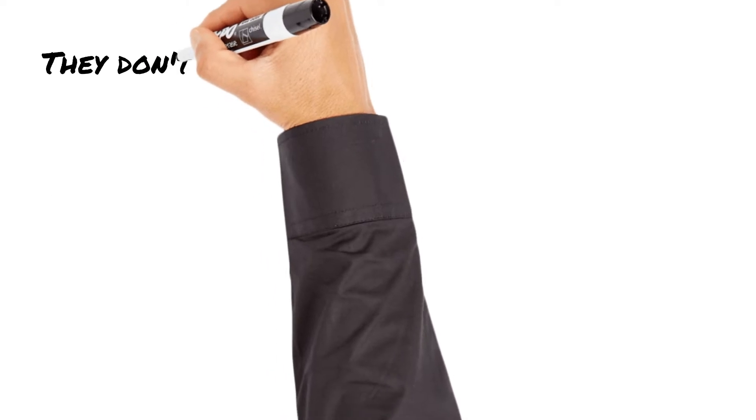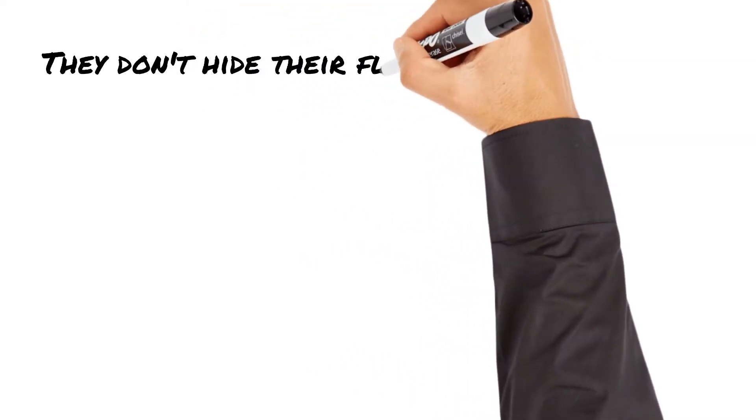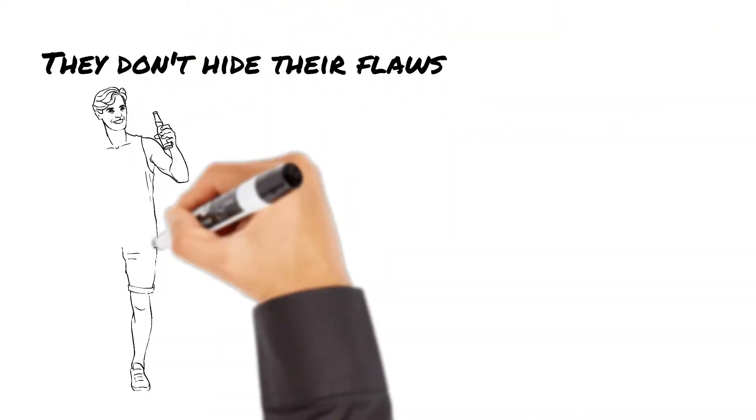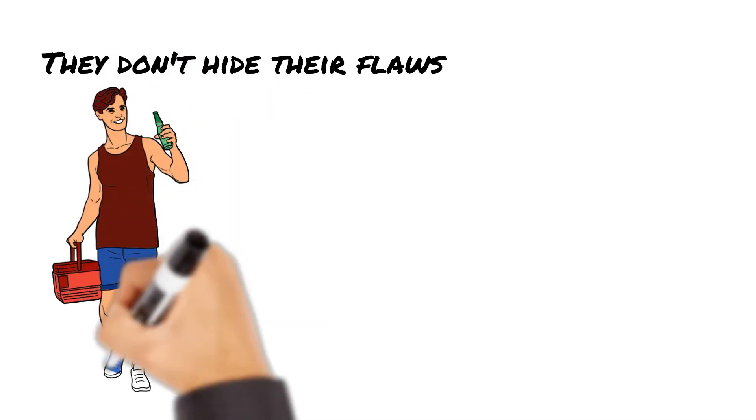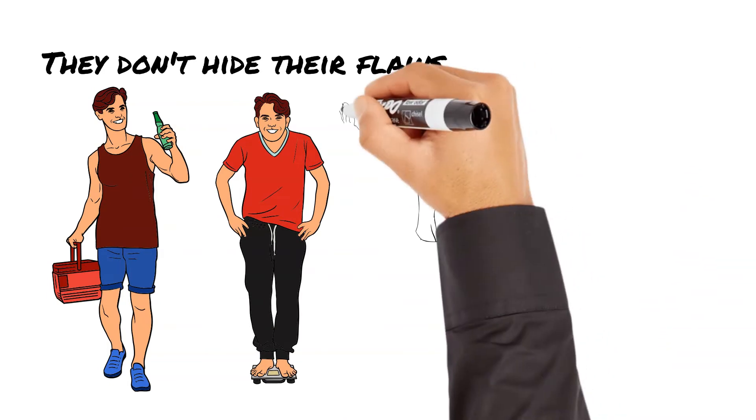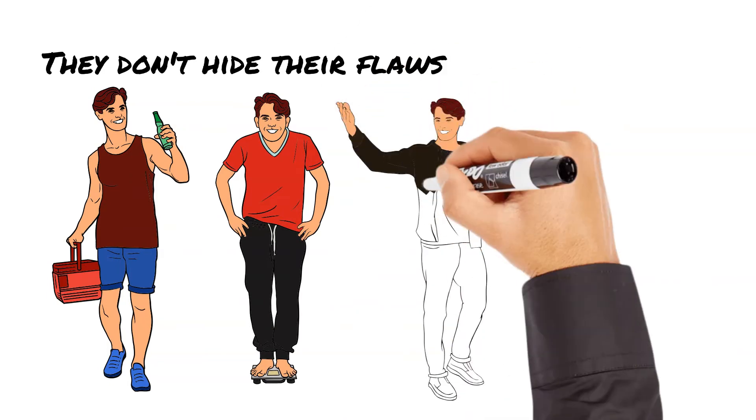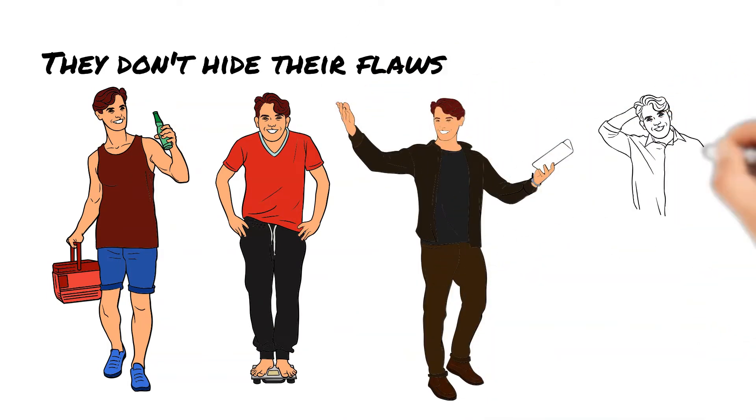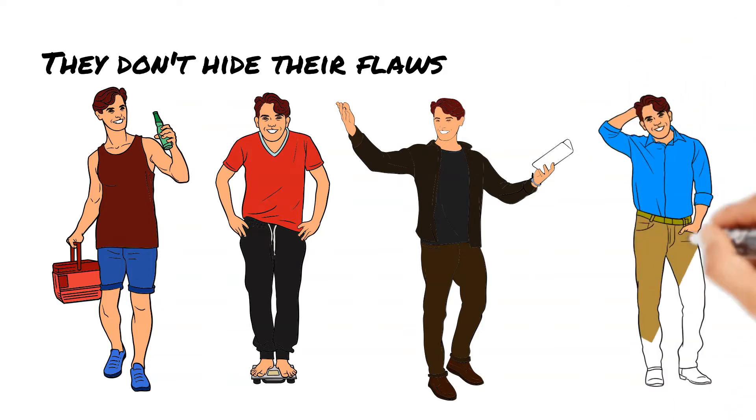Attractive characters like to talk about their flaws in an effort to connect with their audience. They hope that by sharing their vulnerabilities, they can create a foundation of trust which will help them build better relationships. It's a simple way of showing people that even though they have quirks and imperfections, they are still desirable and worth knowing.